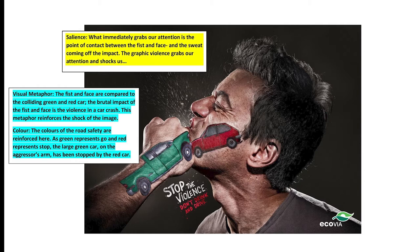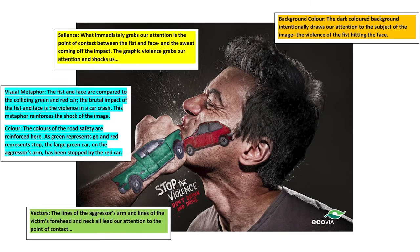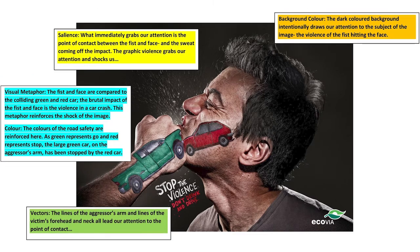The composer effectively uses colours to road safety, as green represents go and red stop. Everything seems to be linked, and this highlights how a lot of thought goes through the construction of images. The green car on the arm has come to a sudden stop by the red car on the face, and the choice of a dark colour surrounding the subject helps us focus on the salient object.